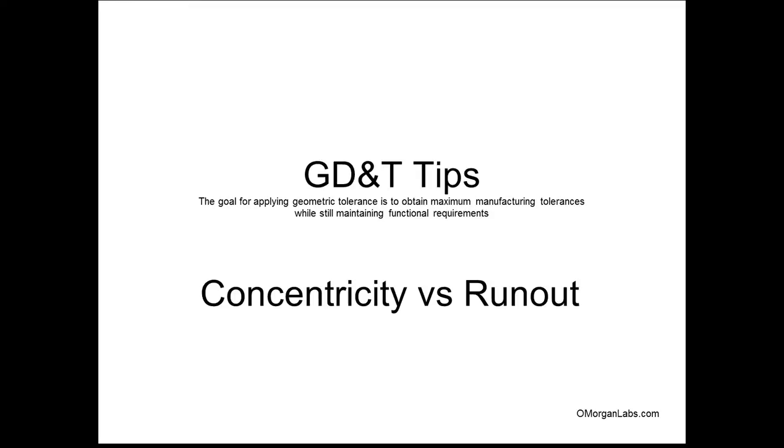Basically, the goal of GD&T is to obtain maximum manufacturing tolerances while still maintaining functional requirements. So you want to make parts that are good enough for your application, but not impossible to make.